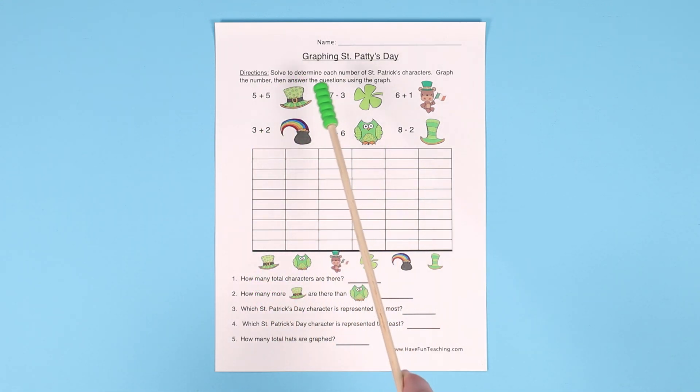So for example, the green hat is 5 plus 5, so you find the green hat. 5 plus 5 is 10, so they color in 10 sections of the bar graph.